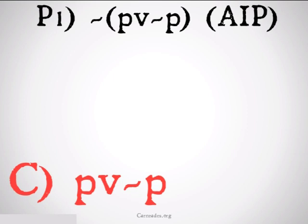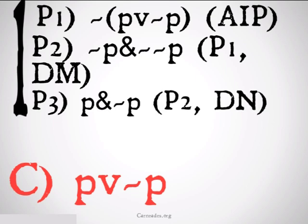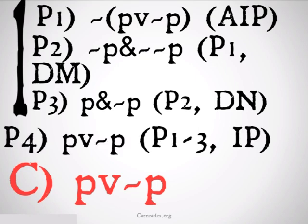So it's not the case that p or not p, assumed indirect proof. Draw our line going down. We're going to use De Morgan's to get not p and not not p, and with double negation we can just end up with a contradiction, p and not p. So it is the case that p or not p from 1 through 3, indirect proof.